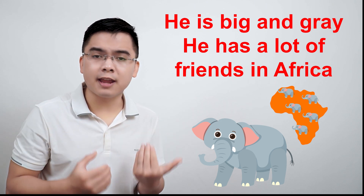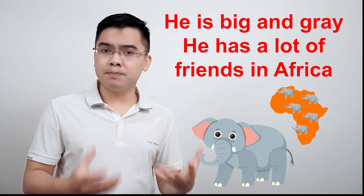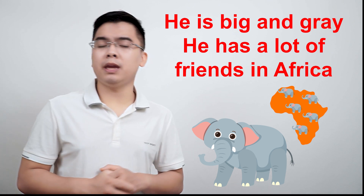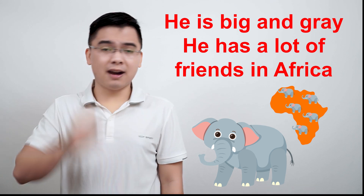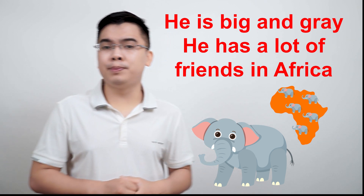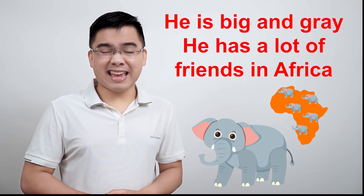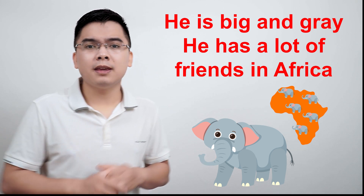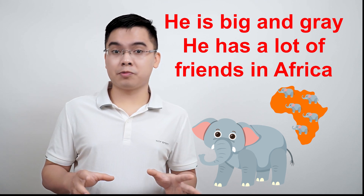Who is big and gray? Andy! Great. Is Andy small? No. Is Andy tiny? No. Is Andy big? Yes, Andy is big. Is Andy big and blue? No, it's not big and blue. Is Andy big and yellow? No, it's not yellow.